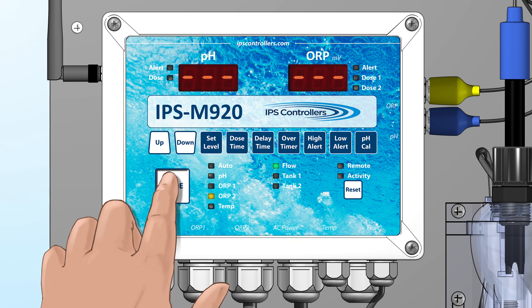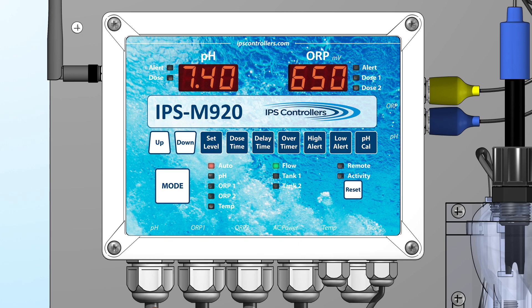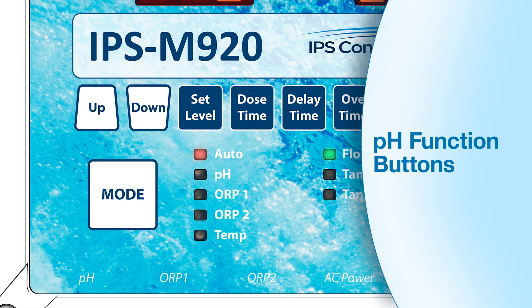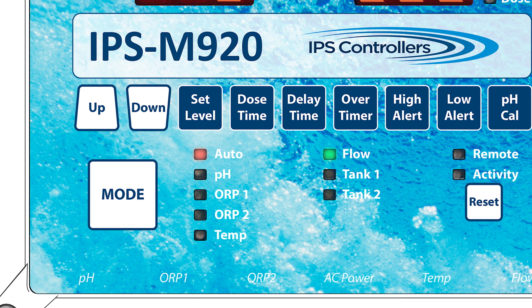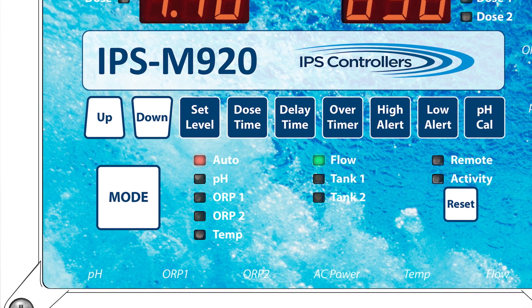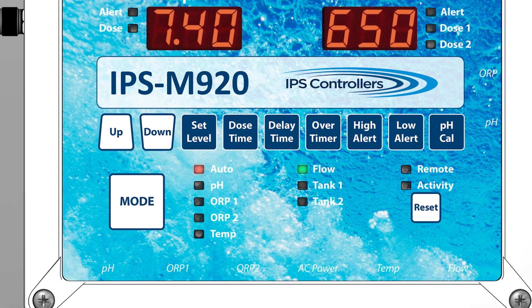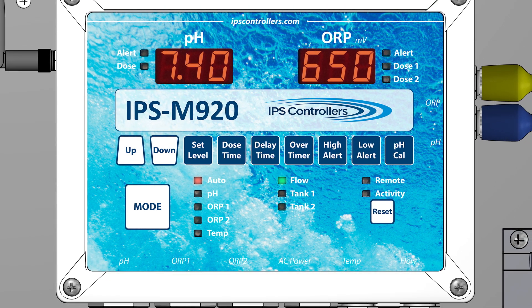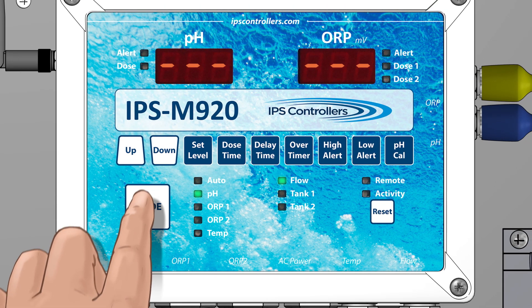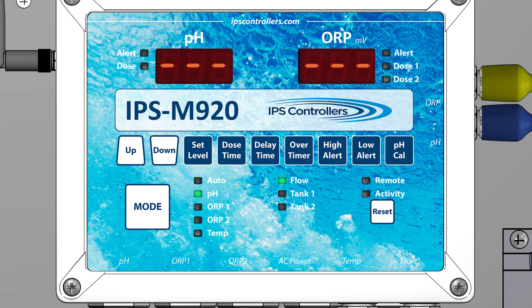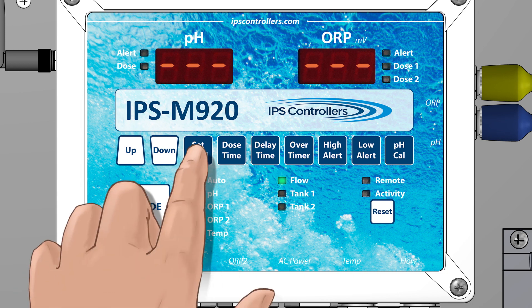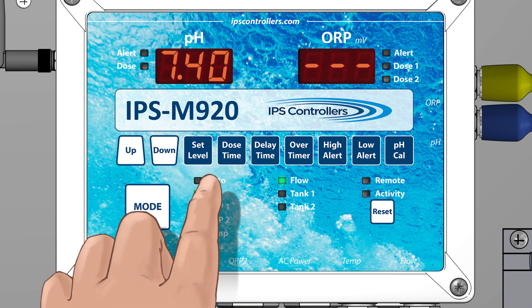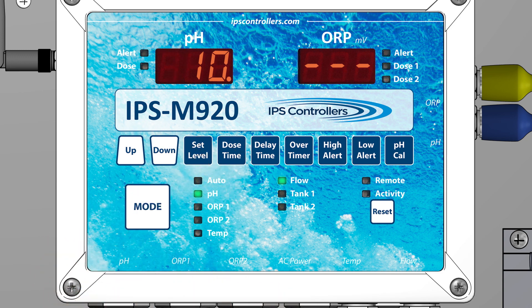The controller must be sent back to the Auto mode to display current readings and operations. The Auto mode is the normal operational mode — the controller allows full operation and monitoring of both the pH and ORP levels; however, no function buttons are operational. Using the Mode button, cycle to the pH mode. All Auto functions will be disabled. In the pH mode, when a function button is pressed, a value will appear in the pH digital display window.